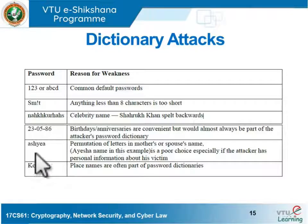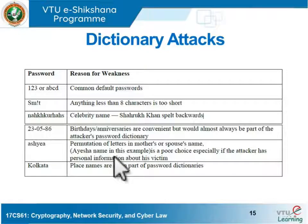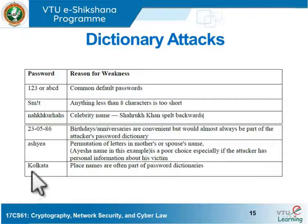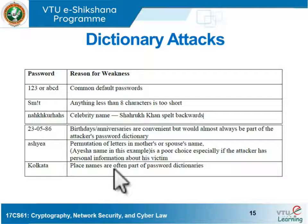A permutation of letters in a mother's or spouse's name — like a jumbled version of 'Aisha' — is a poor password choice because the attacker likely already has information about the victim. Similarly, a place name like 'Kolkata' is a weak password because place names are already part of standard password dictionaries.